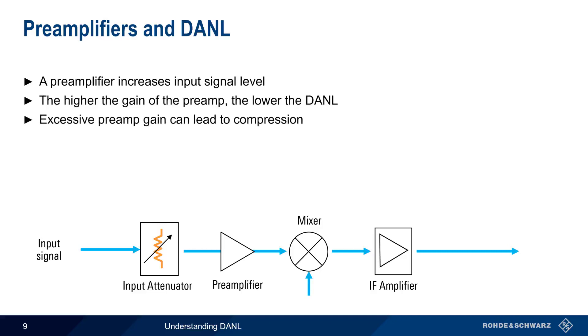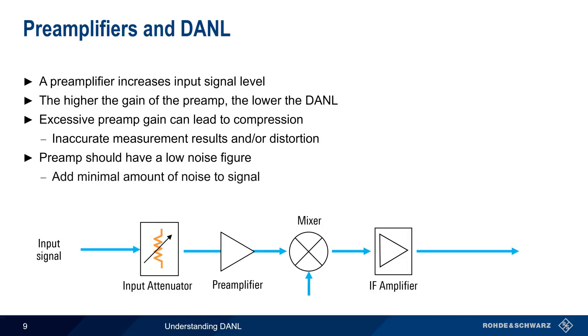Increasing the preamp gain too far can push the analyzer into compression, resulting in inaccurate measurement results and or the creation of unwanted distortion products. The preamp should also have a low noise figure. That is, it should add the minimum possible amount of noise to the signal.